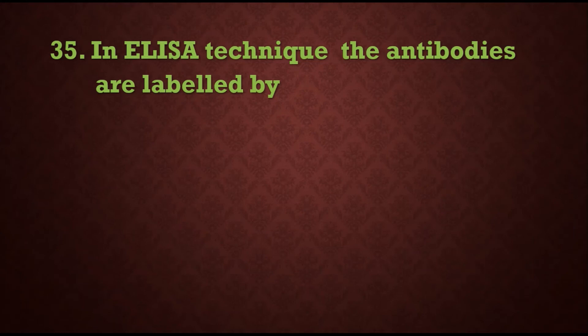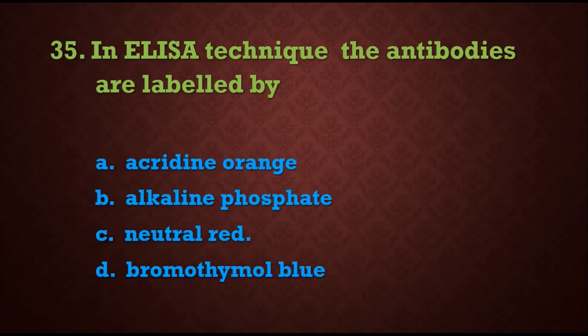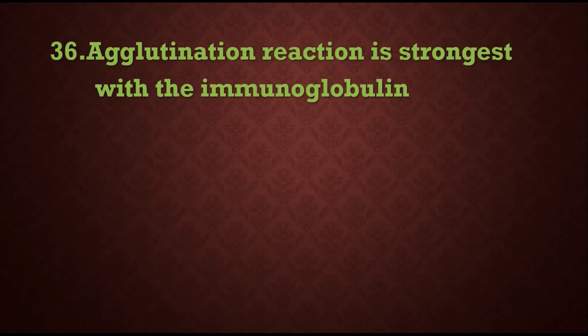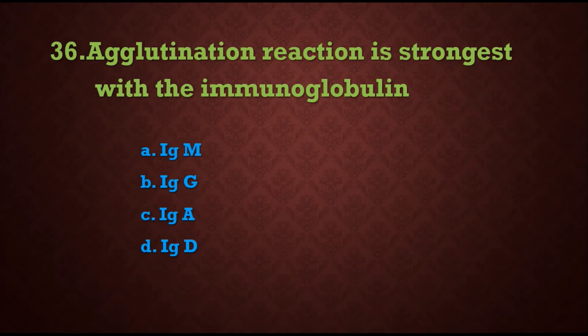Question 35: In ELISA technique, the antibodies are labeled by — options are: A) acridine orange, B) alkaline phosphatase, C) neutral red, D) bromothymol blue. The answer is B) alkaline phosphatase, which is the enzyme used in ELISA technique to label the antibodies.